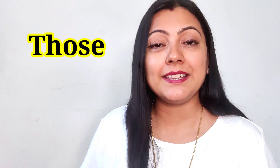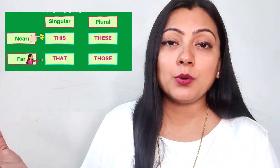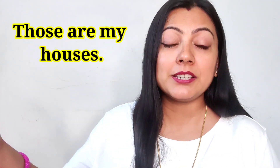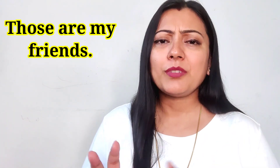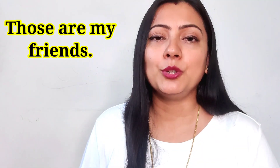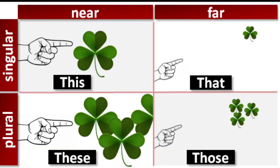Those are my houses. Those are my friends. Those were a great time — very nice and powerful. 'Those' is the plural form of 'that,' used for multiple objects far from the speaker. For example: if a single leaf is far away, we say 'that is a leaf.' If multiple leaves are far away, we say 'those are leaves.'